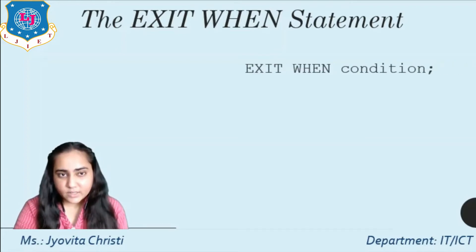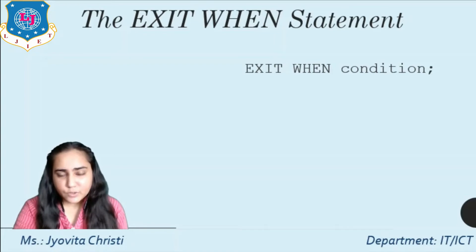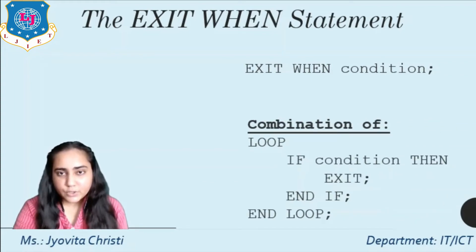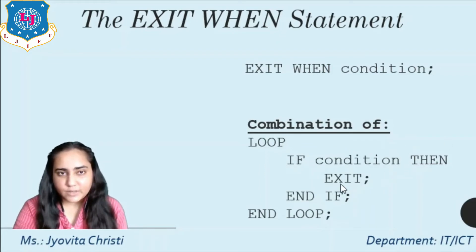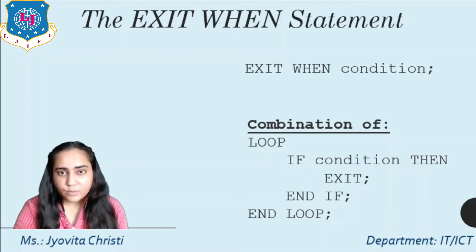The exit when statement exits the current iteration of a loop when the condition in the when clause is true. Essentially exit when is a combination of an exit and an if-then statement. Each time control reaches the exit when statement the condition is evaluated; if true the loop terminates, otherwise execution continues. Inside the loop body you must make the condition true at some point to prevent an infinite loop.